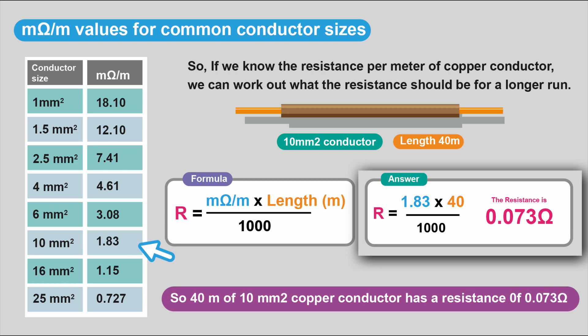1.83 times 40, the length, divided by 1,000 to get it back into ohms. And the resistance of this conductor is 0.073 ohms. So 40 meters of 10 millimeter squared copper conductor has a resistance of 0.073 ohms.